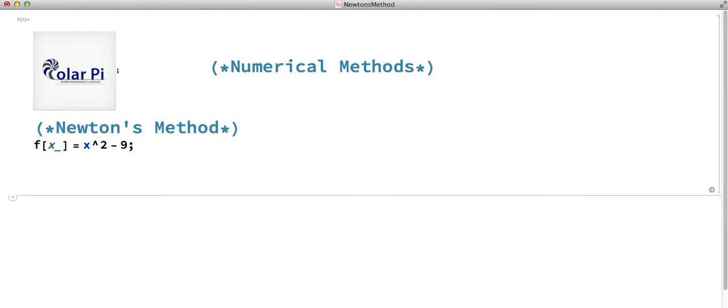And we know that the two zeros of this function are x equals 3 and x equals negative 3. So depending on what our initial guess of the zero is, Newton's method will either find us negative 3 or positive 3.